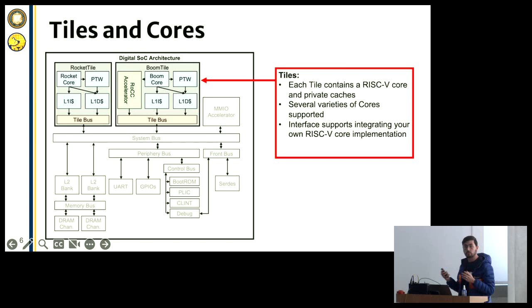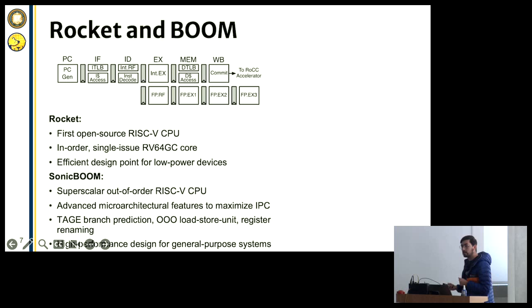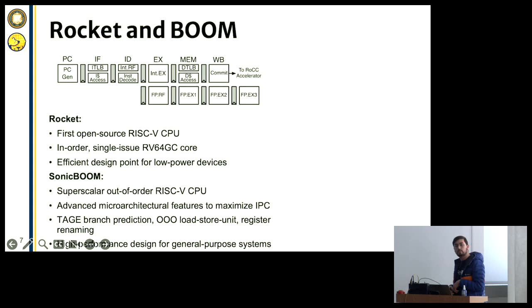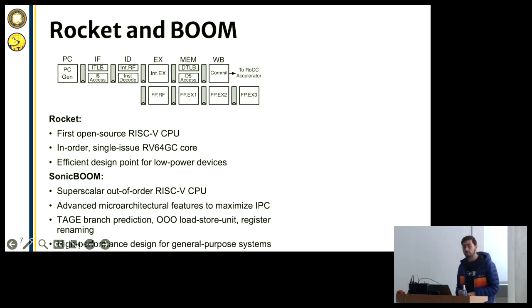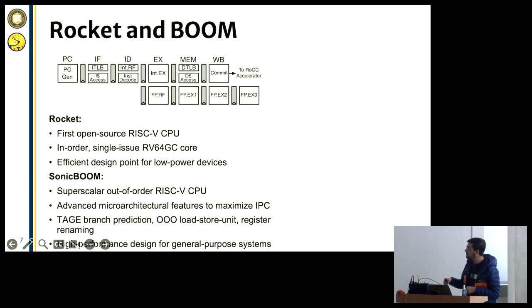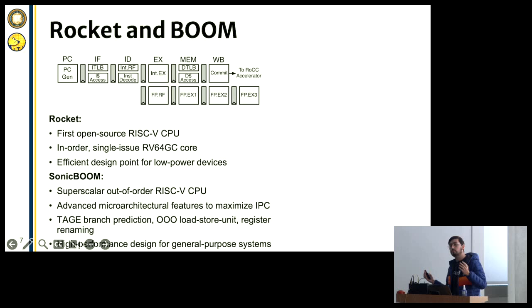Starting with the two cores some people might know. Rocket, synonymous with the RocketChip SOC project, is the first open source RISC-V CPU. It's an in-order core, fairly small and agile, and has been taped out many times at Berkeley and externally. You also have Berkeley's own SonicBoom, another iteration of the Boom out-of-order core. It's an out-of-order superscalar core that you can parameterize in many ways, exposing a lot of IPC with advanced features like TAGE branch prediction — a great high-performance design that can boot Linux quickly and run interesting workloads.